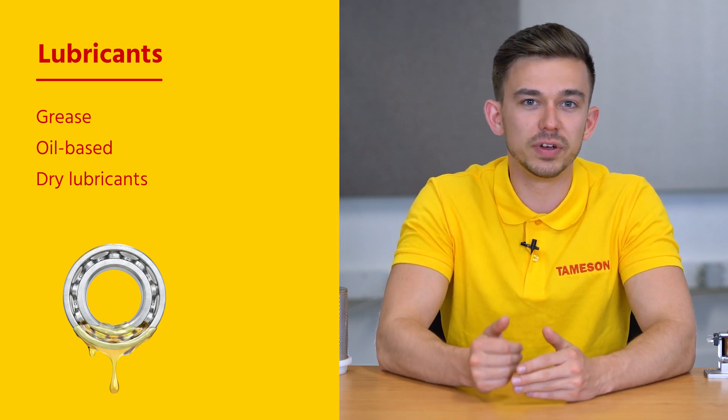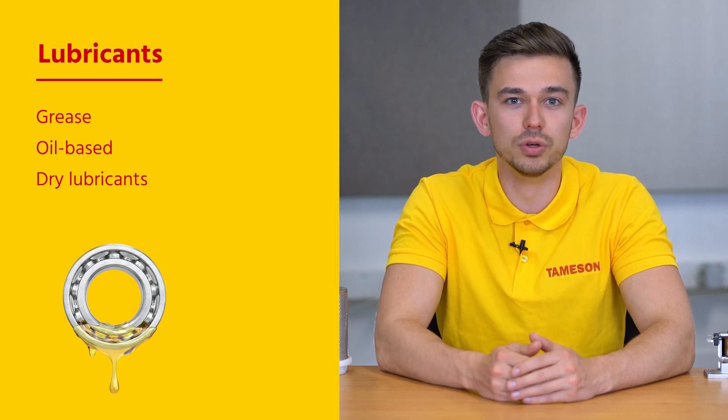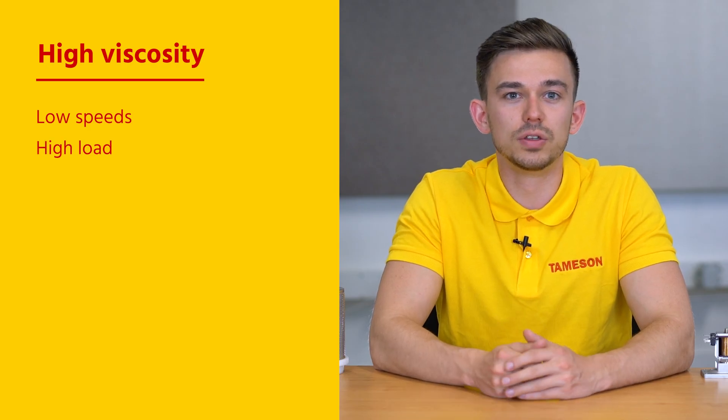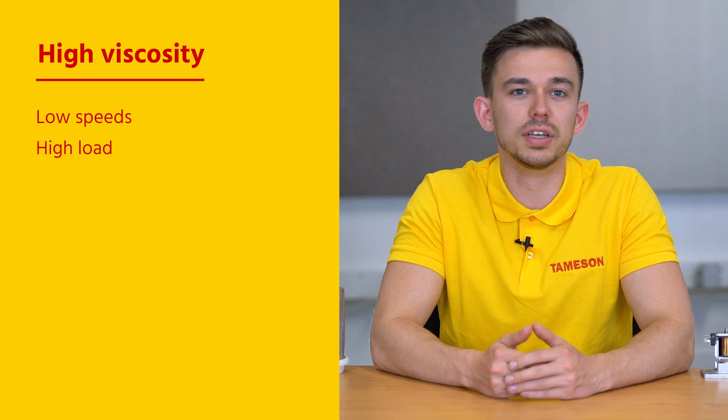Usually, the bearing manufacturer states the right lubricant to use in the bearing manual. One of the most important parameters in choosing a lubricant is its viscosity. A high viscosity increases friction but also ensures that the lubricant will continue to do its job for a longer period of time and therefore requires less maintenance. The choice of viscosity depends on the speed and load. For a low speed and a high load, a lubricant with a high viscosity is advised.